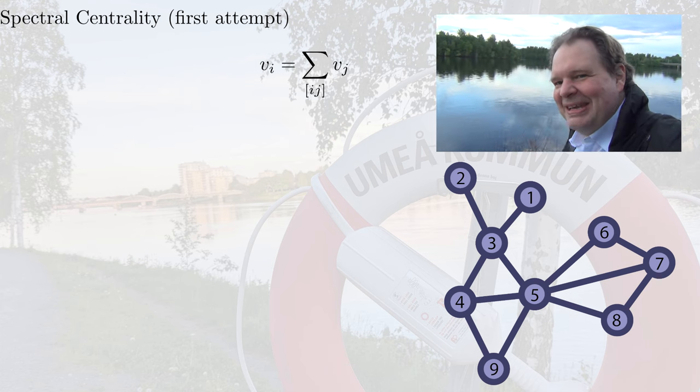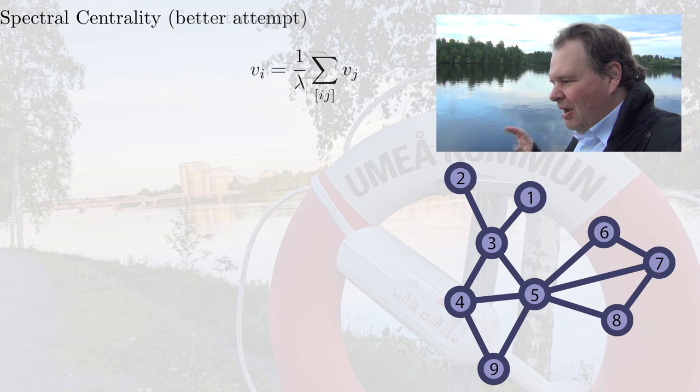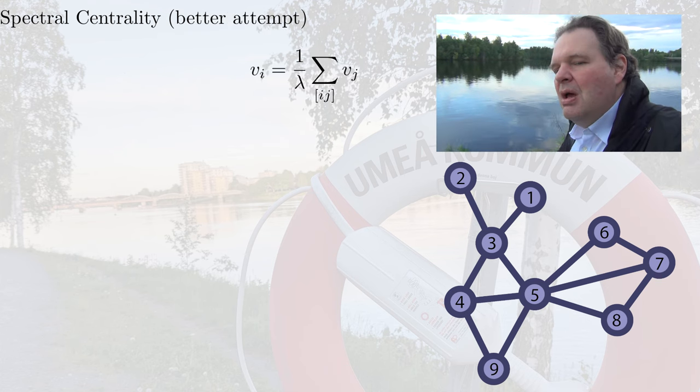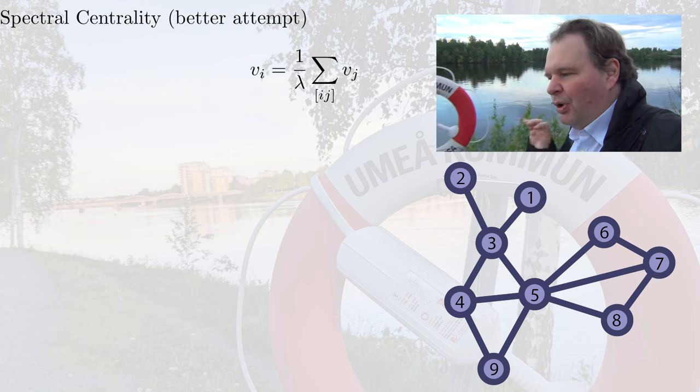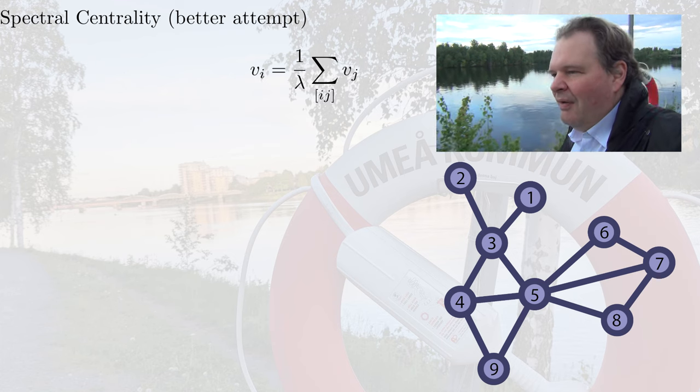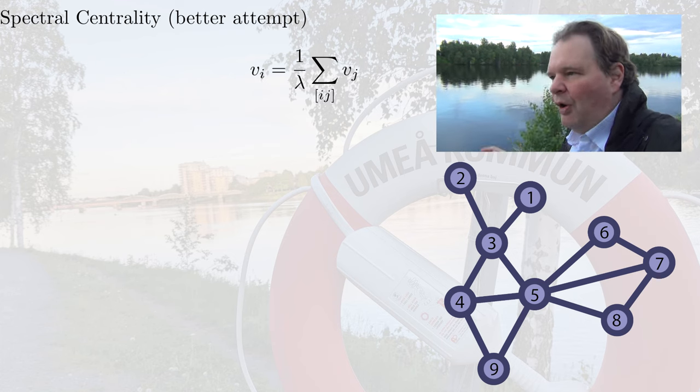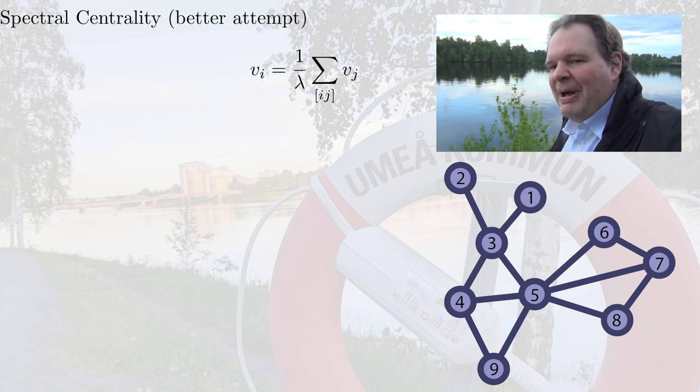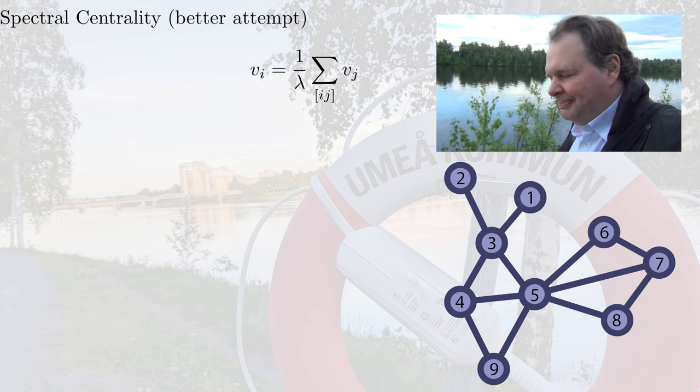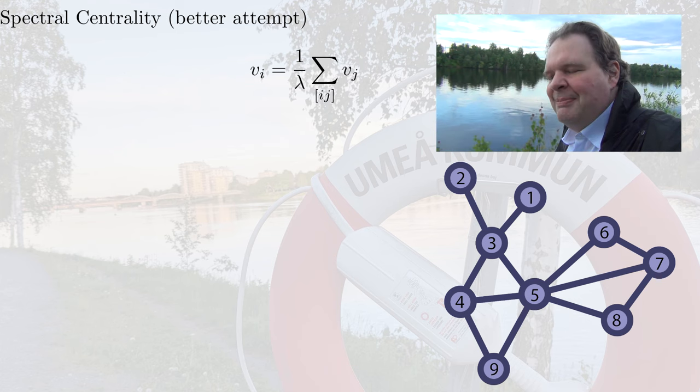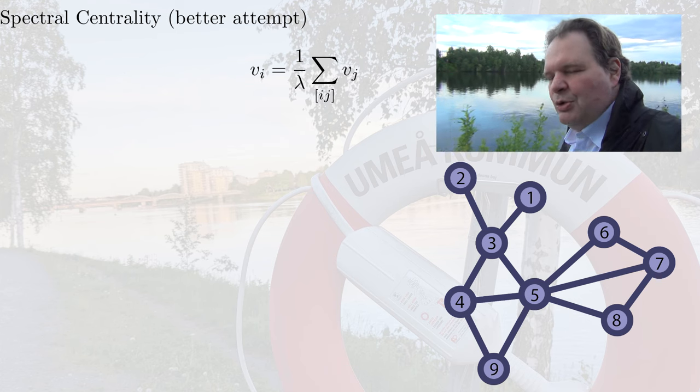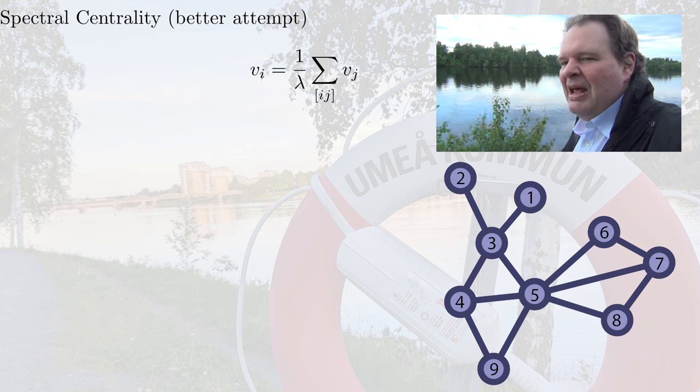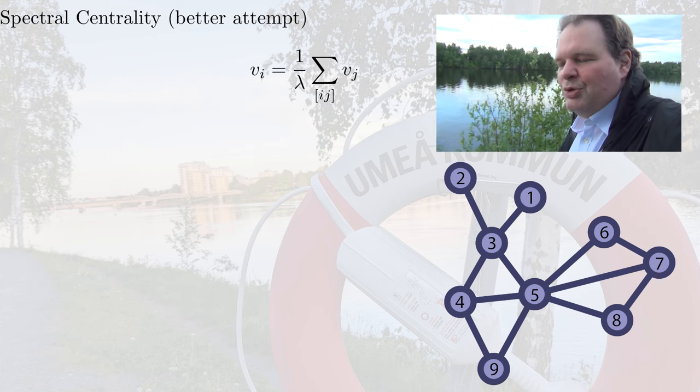Okay, let's try this again. Here's the second attempt. We say important nodes have important friends. So to compute the importance of a node i, we sum the importance of all of i's neighbors. But then we divide by a factor, which we call lambda. If we choose this lambda right, this might have a solution. And we will come back to this and see how lambda needs to be defined to make a solution possible.